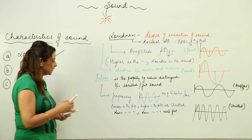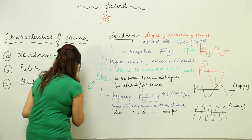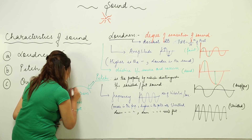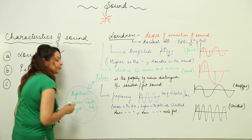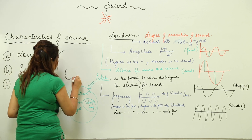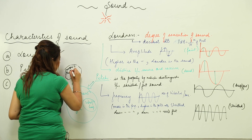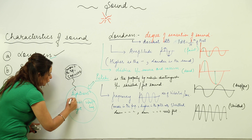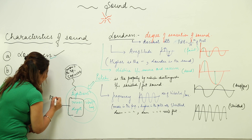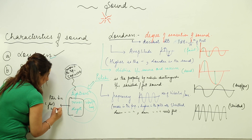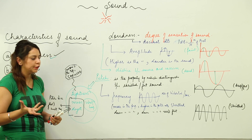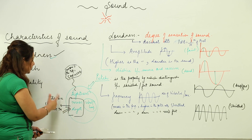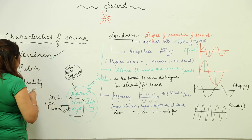Pitch also depends upon some other factors. It depends upon tightness, mass, and also the length of the vibrating body. More is the tightness, shrill or sharp is the voice. Pitch actually decreases with increase in mass and length of the vibrating body — like the larynx, which also has a vibrating body inside. So if the mass and length increase, the pitch decreases, meaning the flatness of the sound increases. So the second property, pitch, is covered.